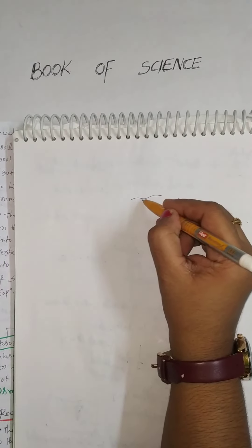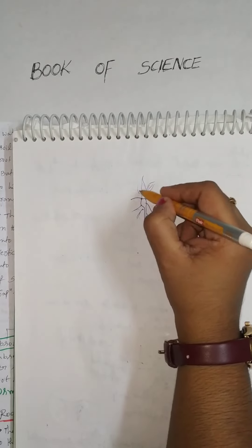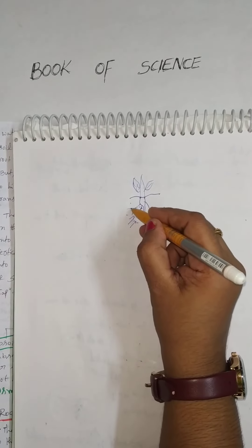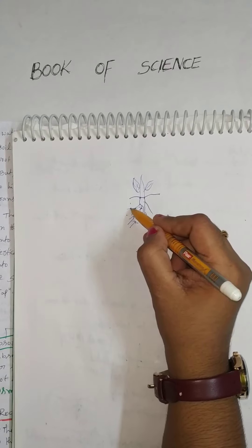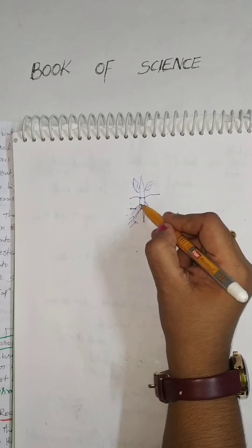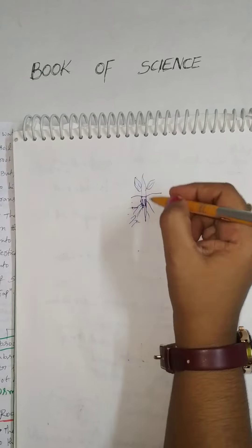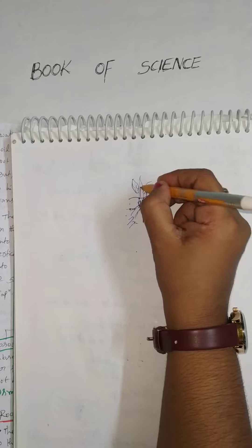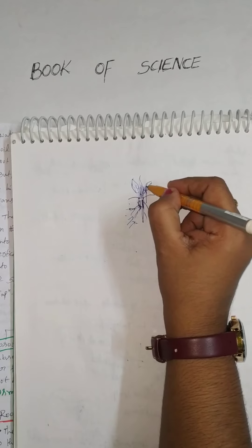Here we can discuss with the diagram. This is the root. In the osmosis process, the root hair absorbs water and it enters into the root hair. After that, it moves into the center part of the xylem. After entering into the xylem, how does water move from downwards to upwards? The stem also has xylem, and the leaves also have xylem.